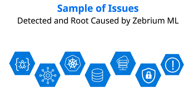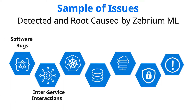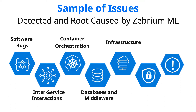For example, here's a sample of the kinds of things Zebra can detect and root cause: bugs, infrastructure problems, middleware problems, and so on. The reason it works so well across almost any kind of failure is that the machine learning has been modeled on the fundamental ways software behaves when it breaks.